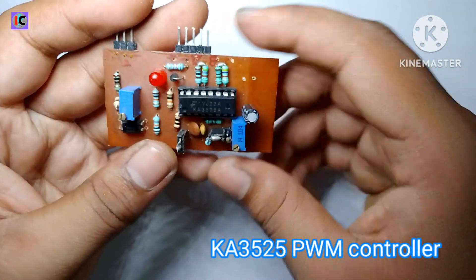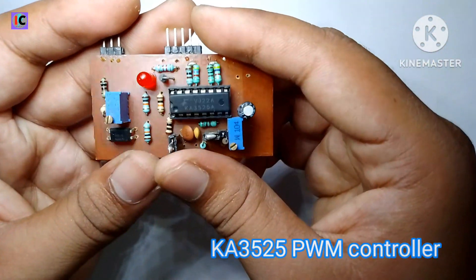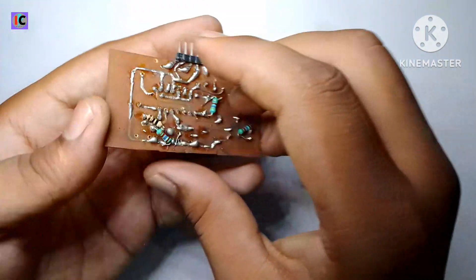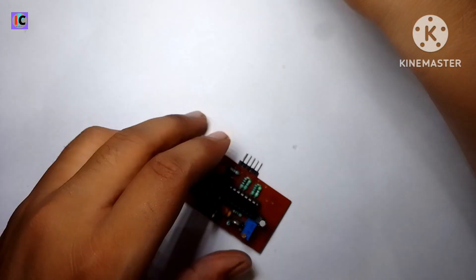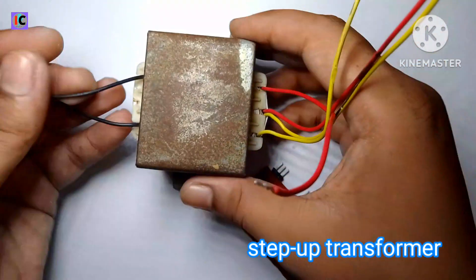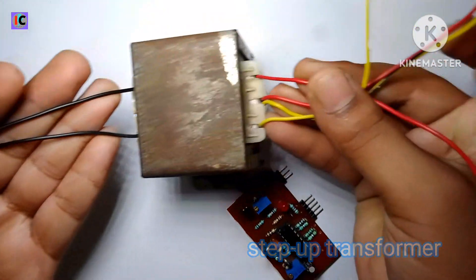Hello friends, welcome to my channel. You can see it's a KA3525 PWM controller IC, and this is used to make PWM signals for making our low frequency inverter.